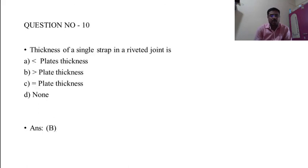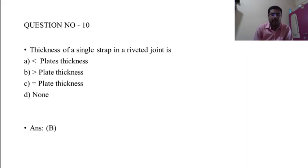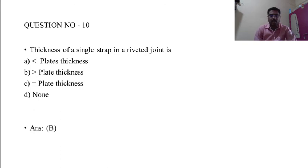Question 10: The thickness of a single strap in a riveted joint is — A) less than plate thickness, B) greater than plate thickness, C) equal to plate thickness, D) none of the above. The correct answer is B: greater than plate thickness. Thank you all, we will see you in the next session.